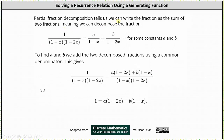Partial fraction decomposition tells us we can write 1 / [(1 - x)(1 - 2x)] as a sum of two fractions: A / (1 - x) + B / (1 - 2x), where A and B are constants. So if we can find A and B, we can find the partial fraction decomposition.